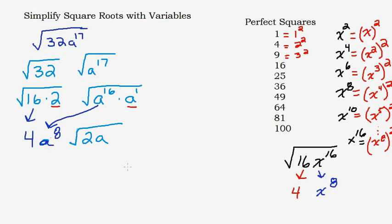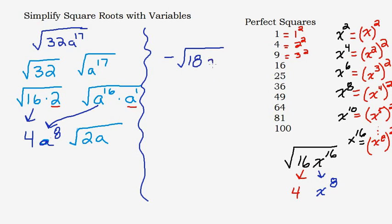Let's try another example. This time we have negative square root of 18x to the fifth. If you think you've got the hang of it, pause the video and try it yourself. We're going to think of this in two separate parts. I'll deal with the 18 first by looking at the perfect squares list.